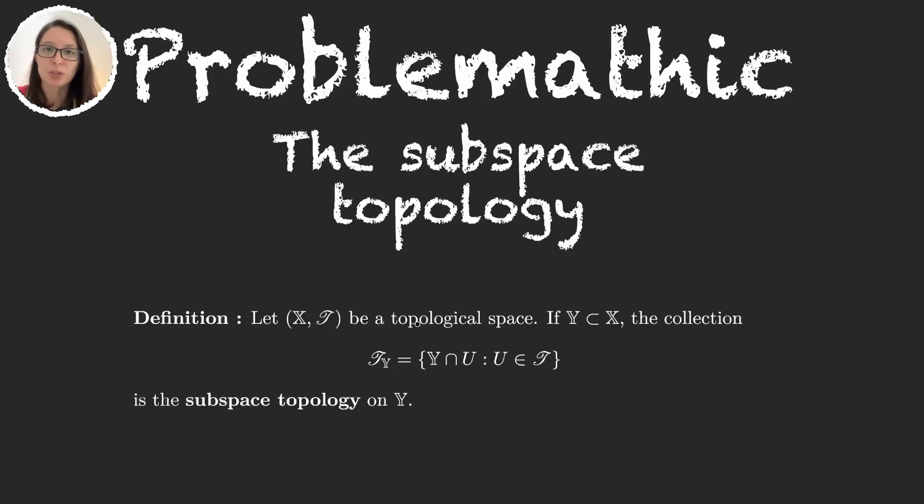We have a topological space (X, 𝒯) and a subset Y of X, and we want to define a topology in this subspace. For this, we will use the topology that we already have in X, and what we will do is grab all the elements in the X topology and intersect them with Y. So this new topology will be the subspace topology in Y.